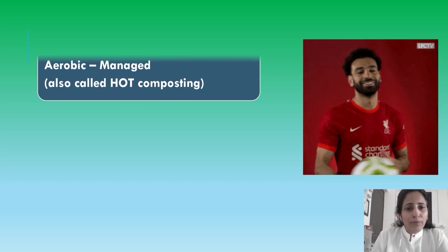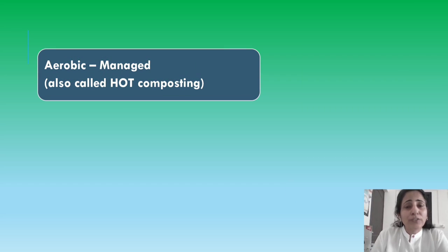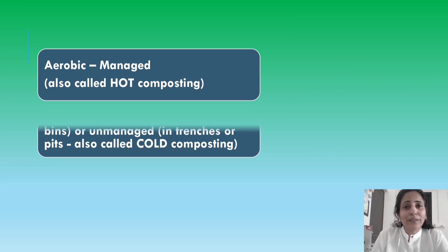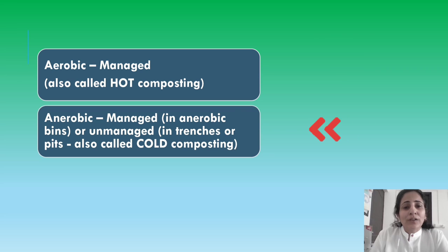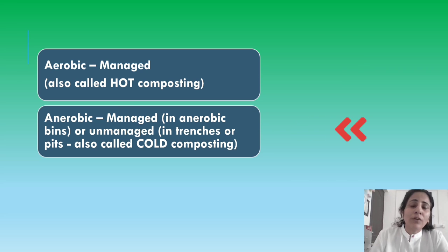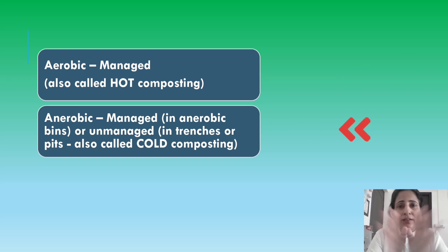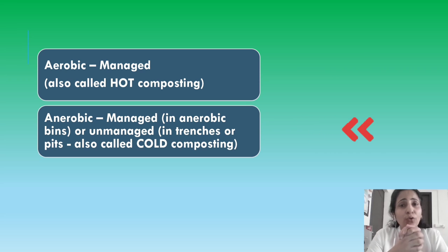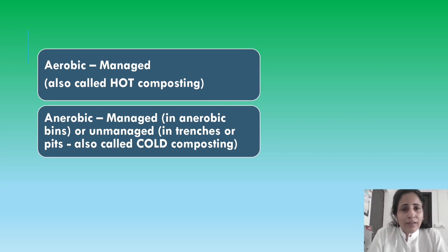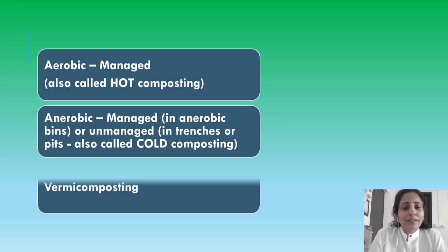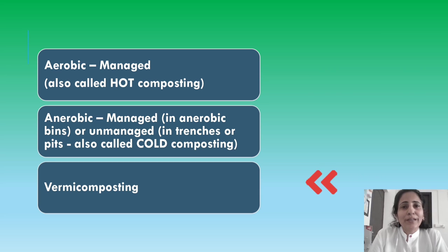There are three main ways of composting. First is aerobic, which is the most common, and it's also called hot composting. The second one is anaerobic — it can be done either in an unmanaged way in the form of digging pits, which is cold composting, or inside our homes. Aerobic means done in an airy setup and anaerobic means no air is permitted. Equally popular is the third way: vermicomposting.